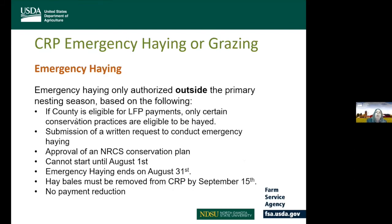Emergency haying is only authorized outside the primary nesting season. If a county is eligible for LFP, only certain conservation practices are eligible to be hayed. Producers must submit a written request and obtain NRCS conservation plan approval. Emergency haying cannot start until August 1st, ends on August 31st, and all bales must be removed from CRP by September 15th. There is no payment reduction under emergency haying. However, only general signup practices — standard warm season or cool season grasses — are eligible; wetland practices or specialty conservation practices are not eligible for emergency haying.